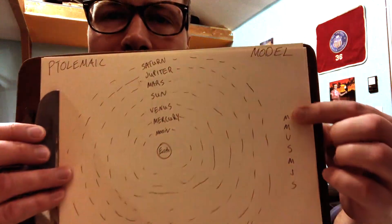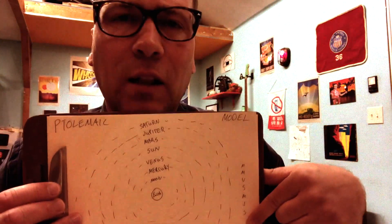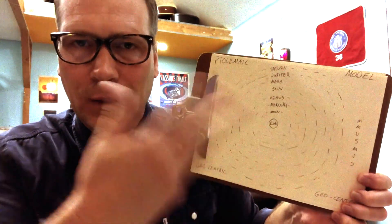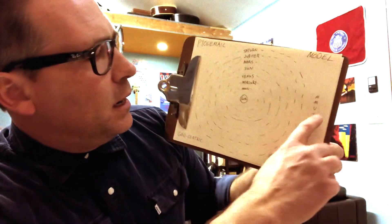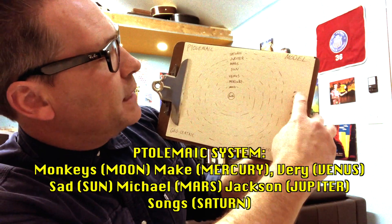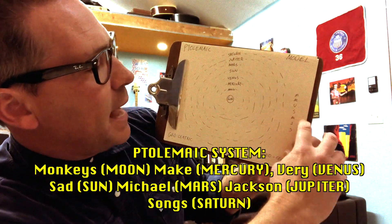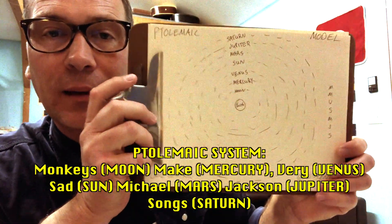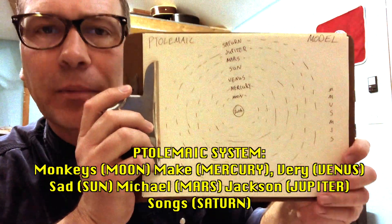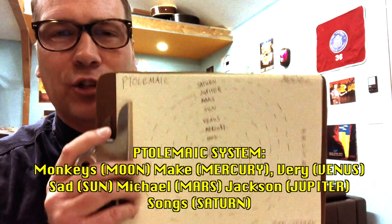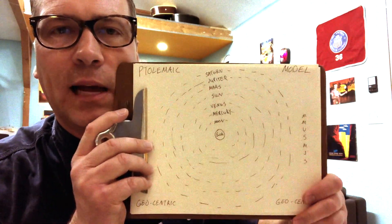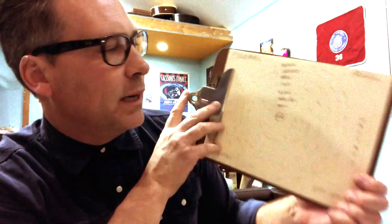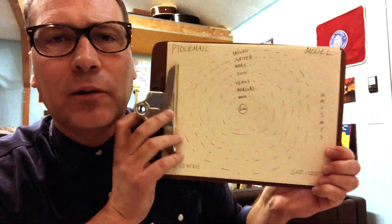I wondered, this is the order of the planets in Ptolemy's time — I wonder what they used. This was my idea of how they might have remembered the order: monkeys make very sad Michael Jackson songs. Except for the fact that Michael Jackson was not alive during that time. But still — monkeys make very sad Michael Jackson songs. You know, it could very well be those are the sounds that monkeys are making; they're trying to emulate the king of pop. We don't know. There are so many mysteries in science.